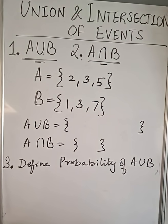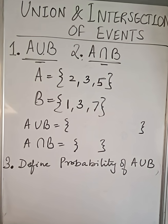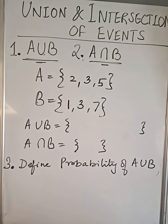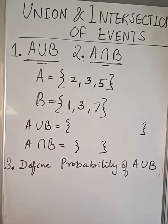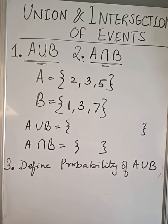Let us find union and intersection of events. First, we will find union of A and B. Second, we will find the intersection of A and B and at last we will define the probability of A union B.